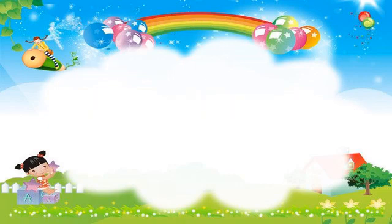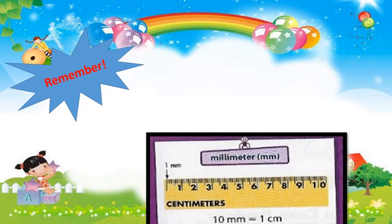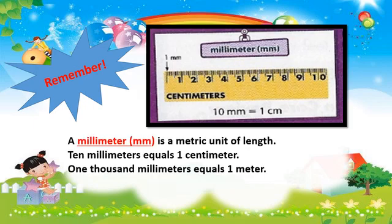Let us remember some important words from this lesson. We have the word millimeter, mm. A millimeter is a metric unit of length. Ten millimeters equals one centimeter, so one thousand millimeters equals one meter.